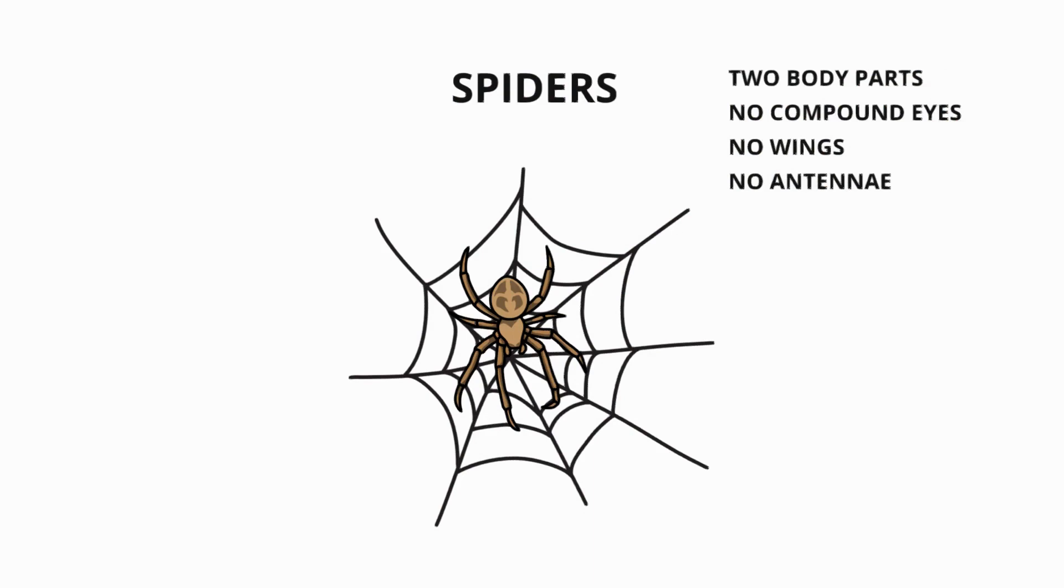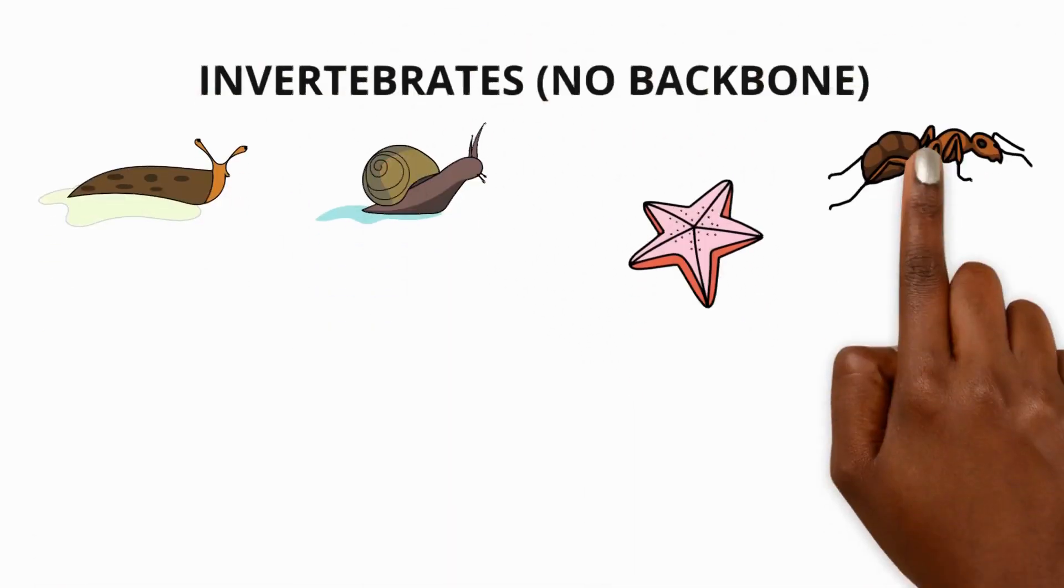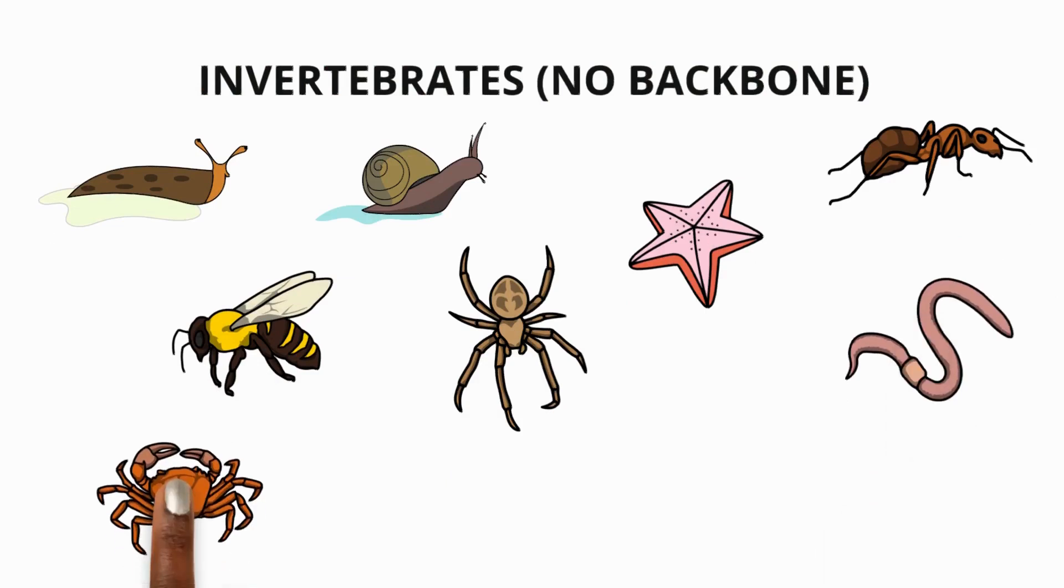Some spiders are poisonous but most are not harmful to humans and have benefits such as eating pests and being used for medicine. Now that you've learned about invertebrates I hope you understand the importance of these animals in our world.